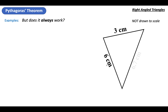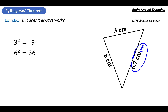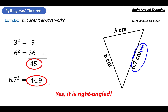Let's try another one: 3, 6, and 6.7. Again, it's been rounded a little bit, so we're just looking for an answer that's really close. The long side is 6.7, so leave that till last. Take the two short sides and square them and add them: 3 squared is 9, 6 squared is 36. Add them to get 45. Then take 6.7 squared, which is 44.9. That's so close to 45 that it's going to be right — just been rounded a little bit, which has affected our answer.